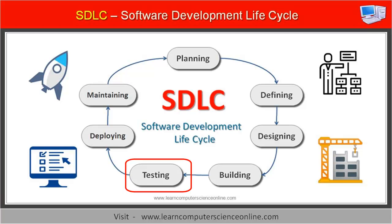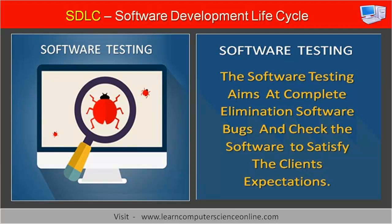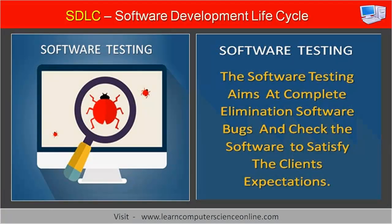The fifth phase in the software development process is software testing. Once the coding task is completed and the final software product is ready for deployment, it is subjected to rigorous and extensive testing before final delivery to the client. Software testing is the standard process used to test the software for its performance, accuracy of results, and user experience, to ensure the satisfaction of user expectations. Testing includes conducting a comprehensive set of tests to identify gaps, errors, and deviations in the final product. The team carries out necessary corrections, aiming at the complete elimination of all software bugs before final delivery. Software bugs are defects that can cause malfunction and damage.